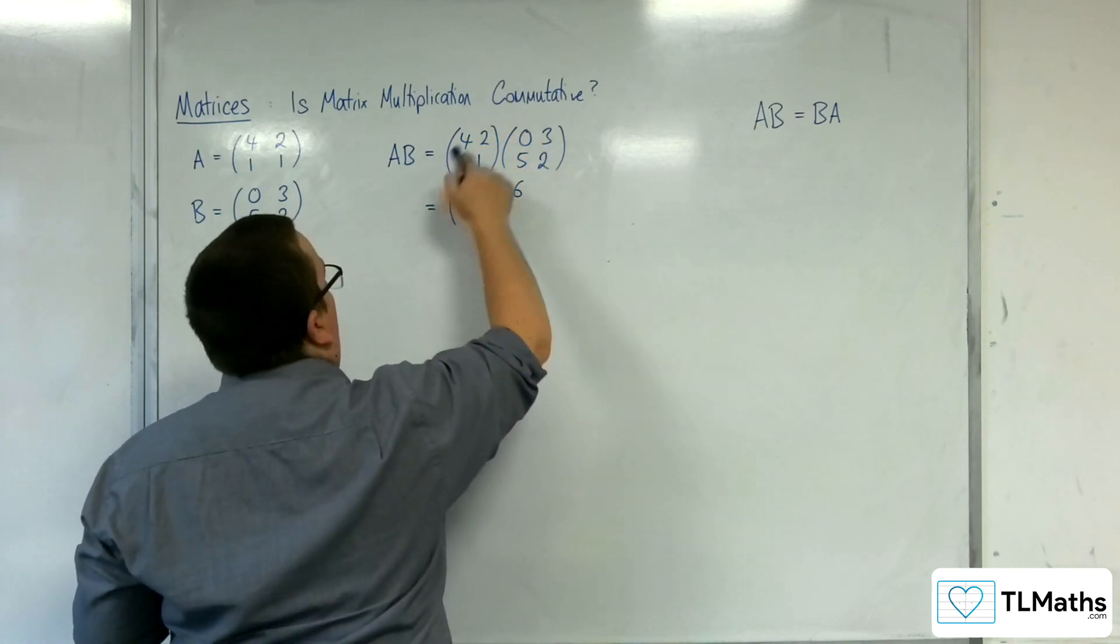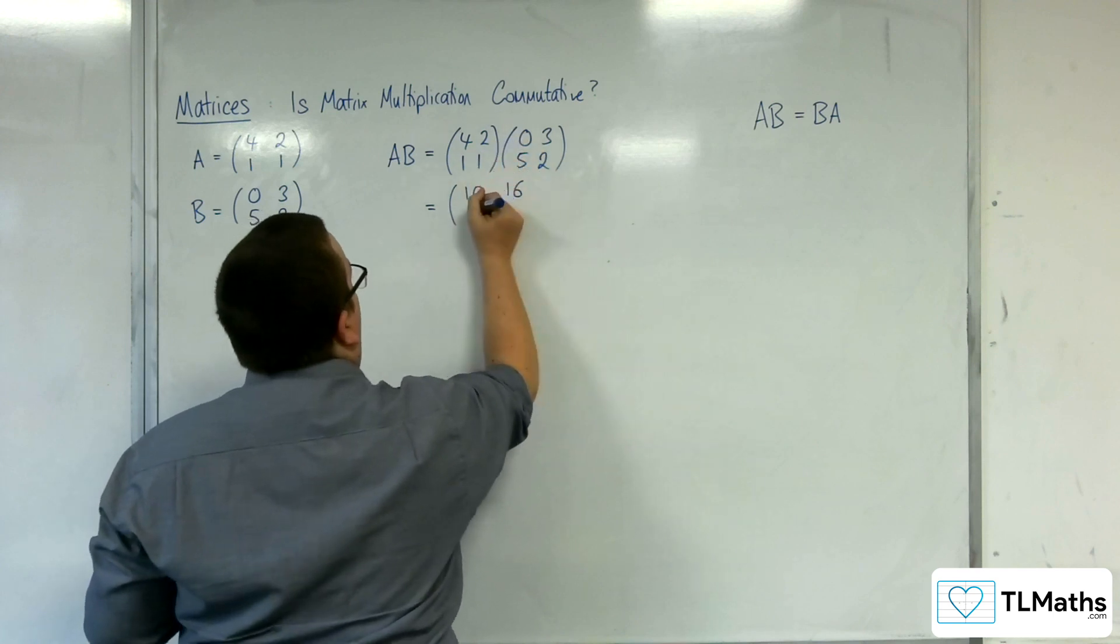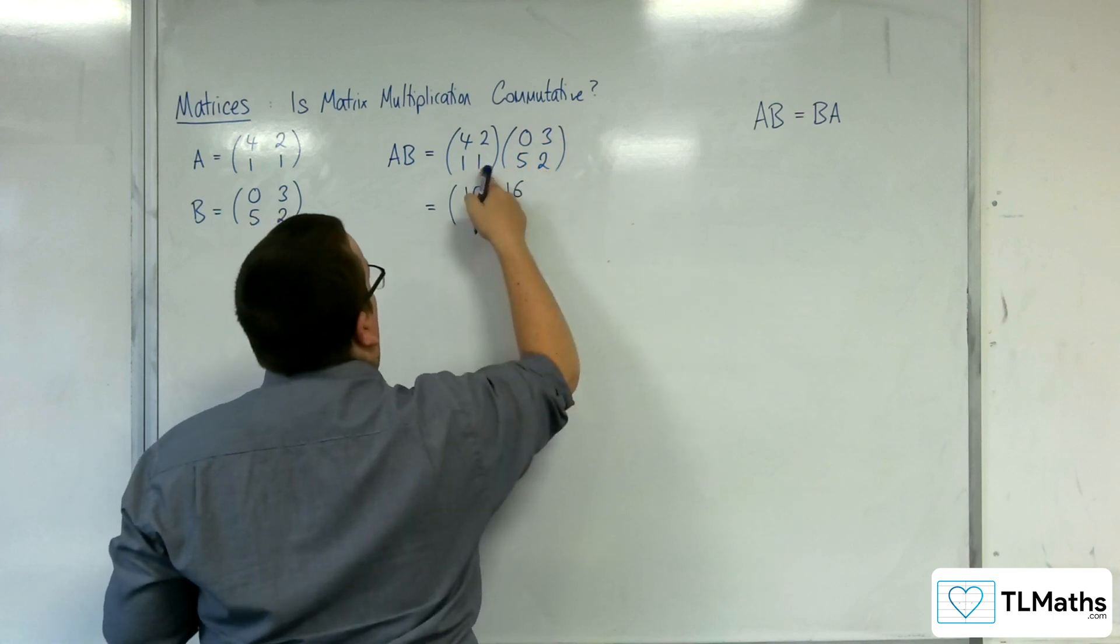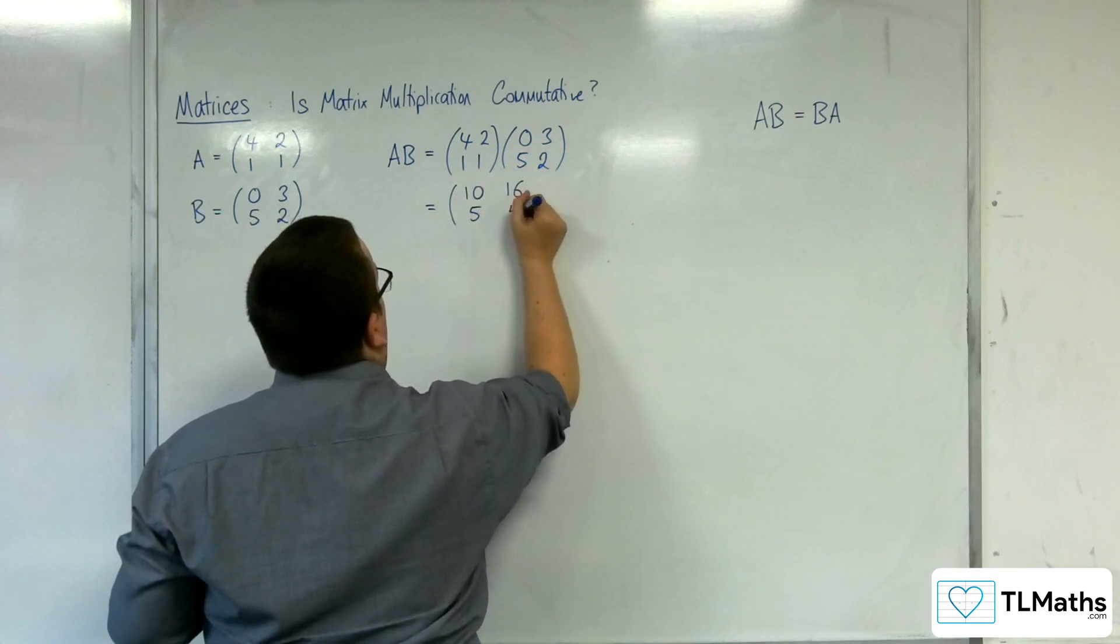1,1 against the 0,5. So 1 lot of 0 is 0, 1 lot of 5 is 5. And then 1,1 against the 3,2. 1 lot of 3 is 3, 1 lot of 2 is 2, and so 3 plus 2 is 5. So this is the matrix AB.